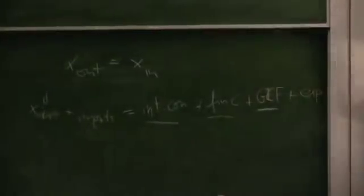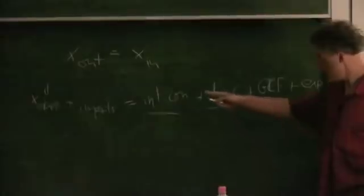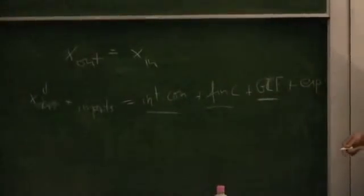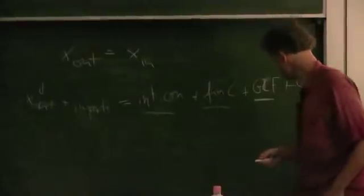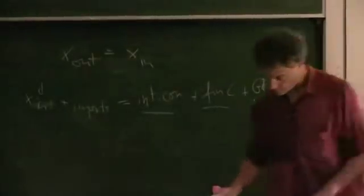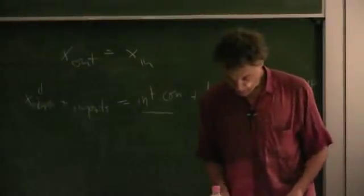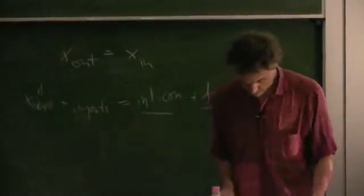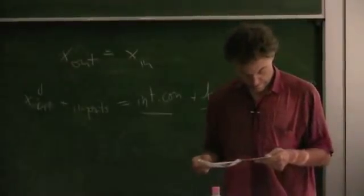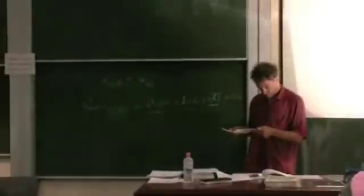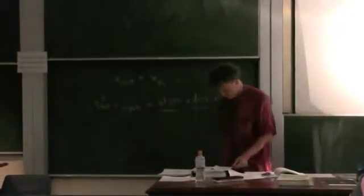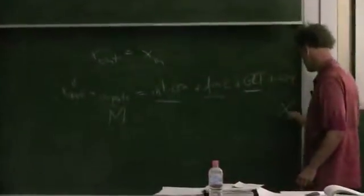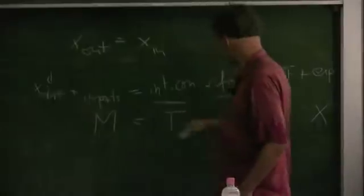I'd like to give these expressions variable placeholders and then introduce the fundamental input-output national accounting identity. Imports are usually labelled M and exports are labelled X. Intermediate consumption is labelled T.